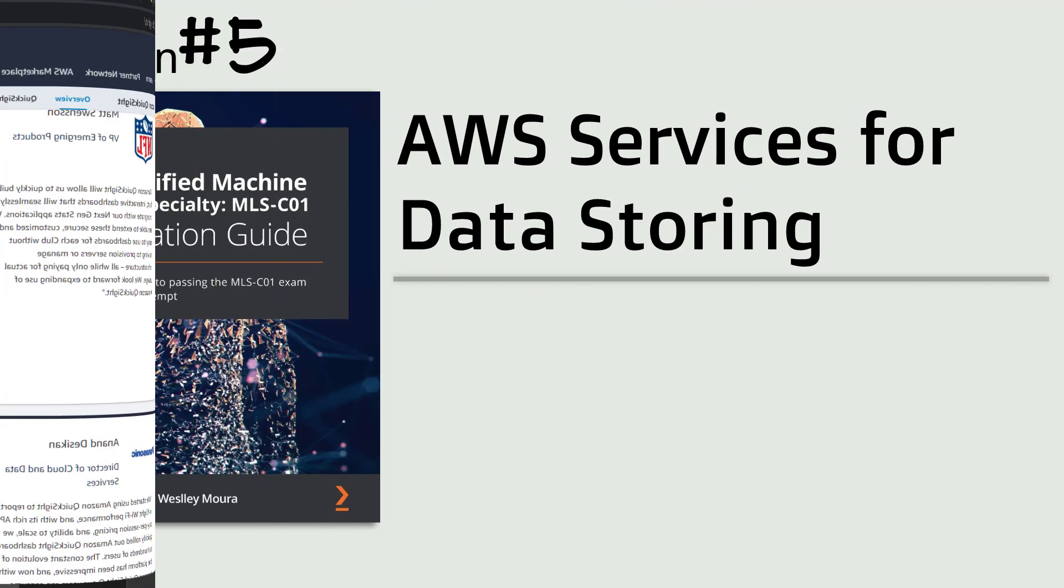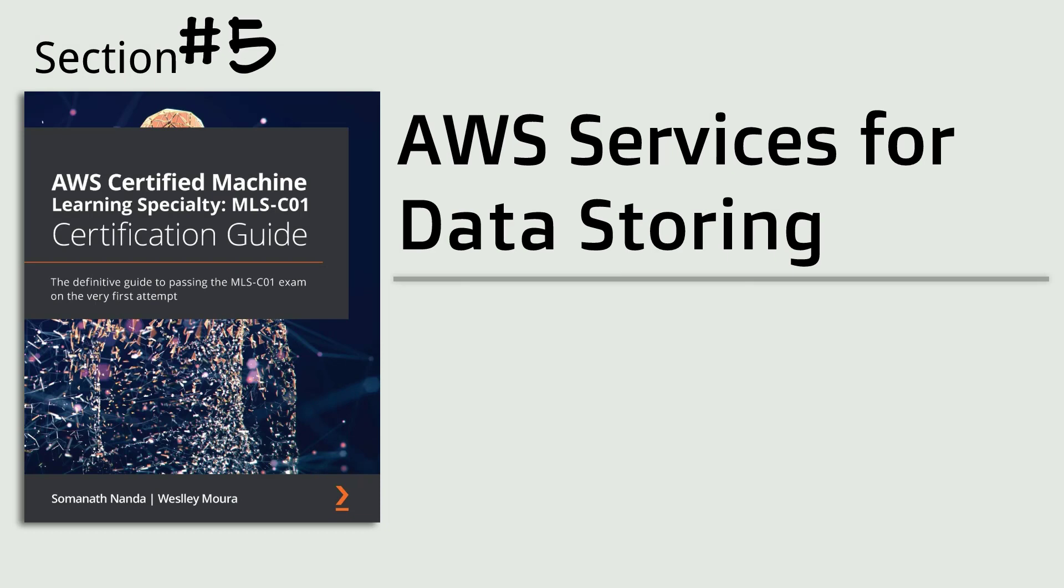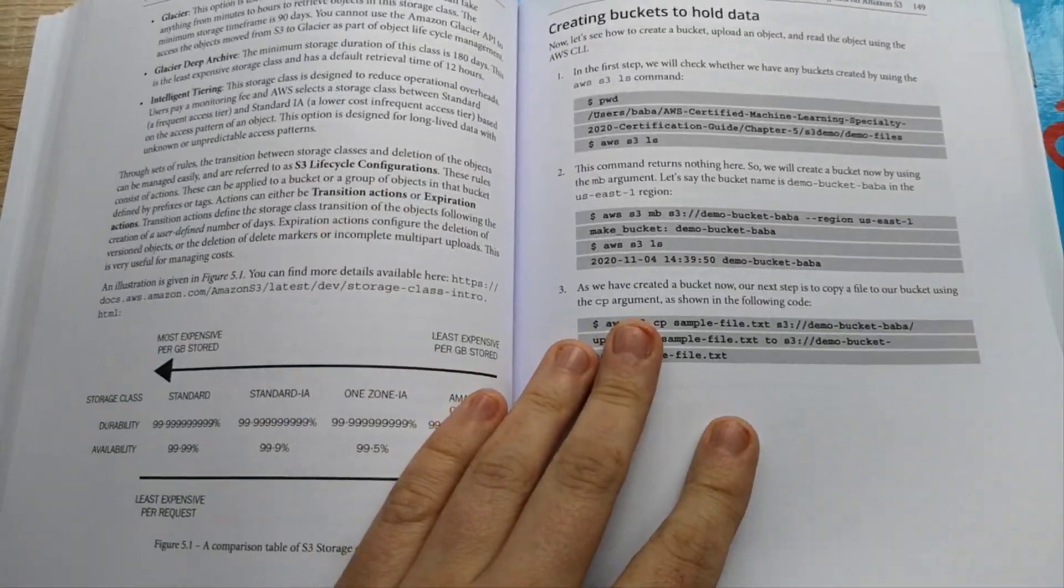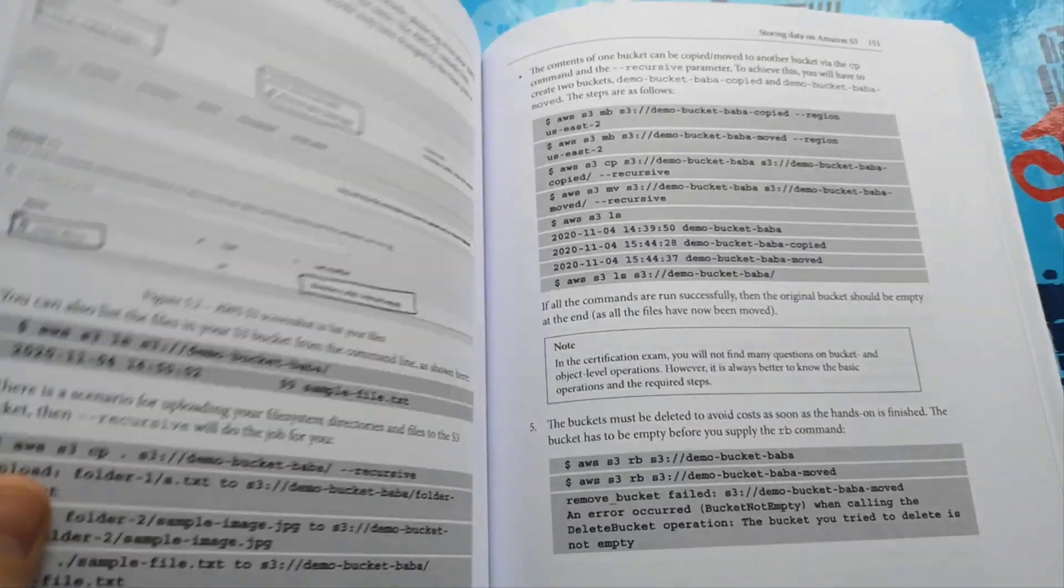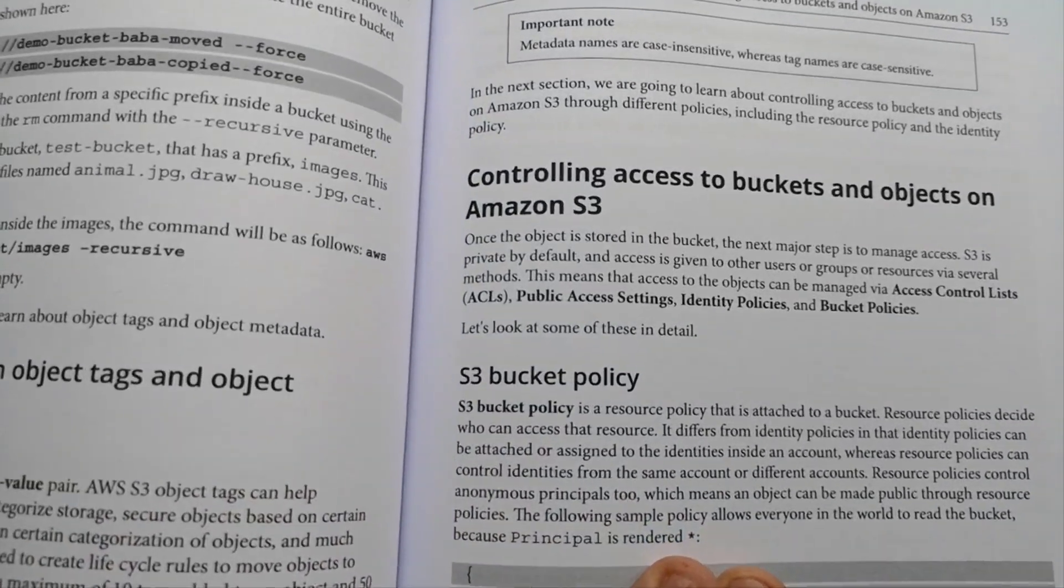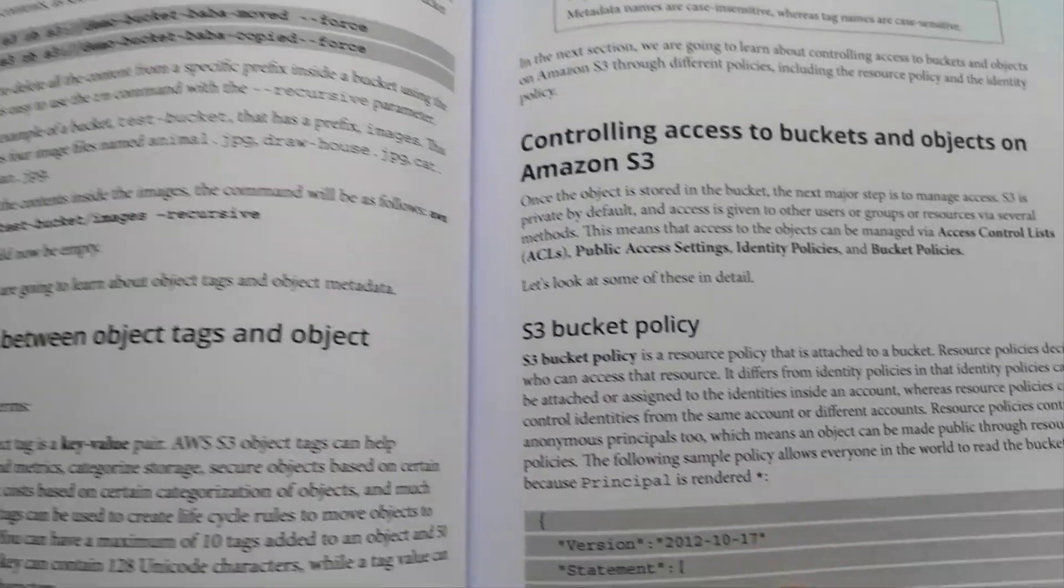Okay, let's go to section number five. It's about AWS services for data storing. AWS provides a wide range of services to store your data safely and securely. There are various storage options available on AWS such as block storage, file storage, and object storage.